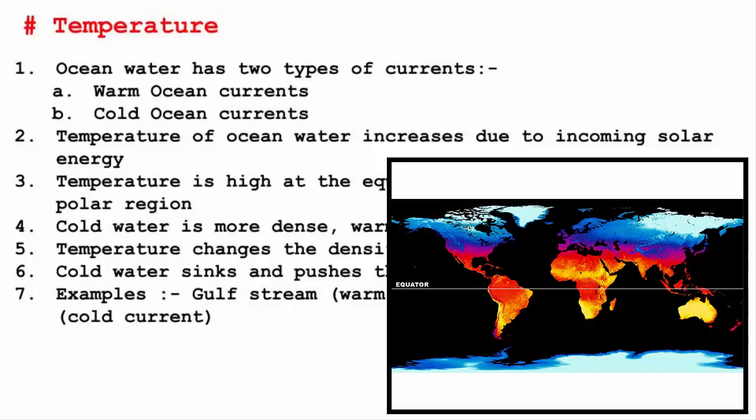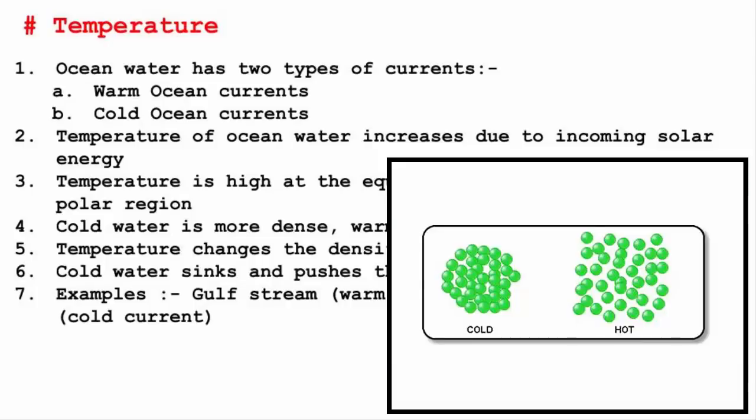Now understand this: when water is cold, the molecules contract and become dense. And when water is warm, the molecules expand and they are more spread out, and that makes it less dense. So basically temperature affects the density of water.